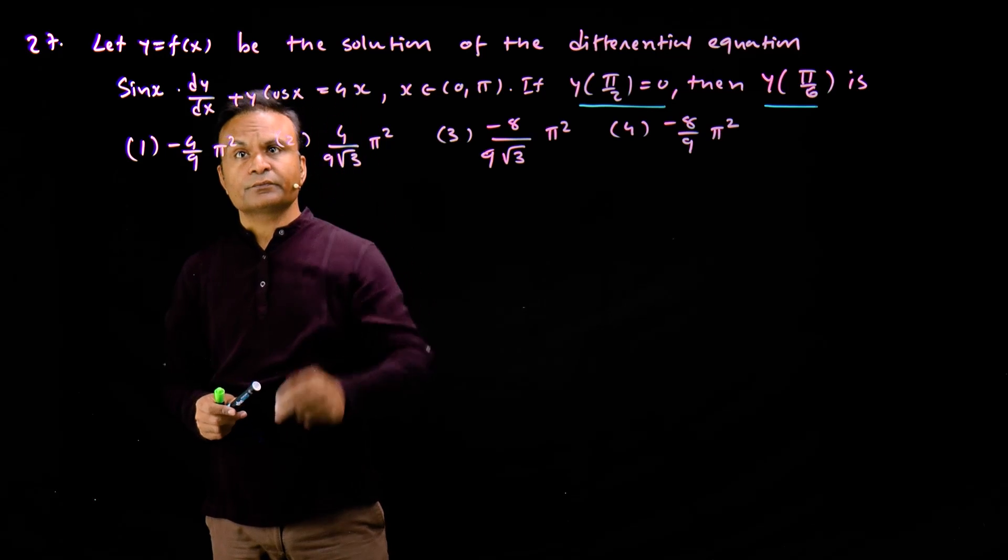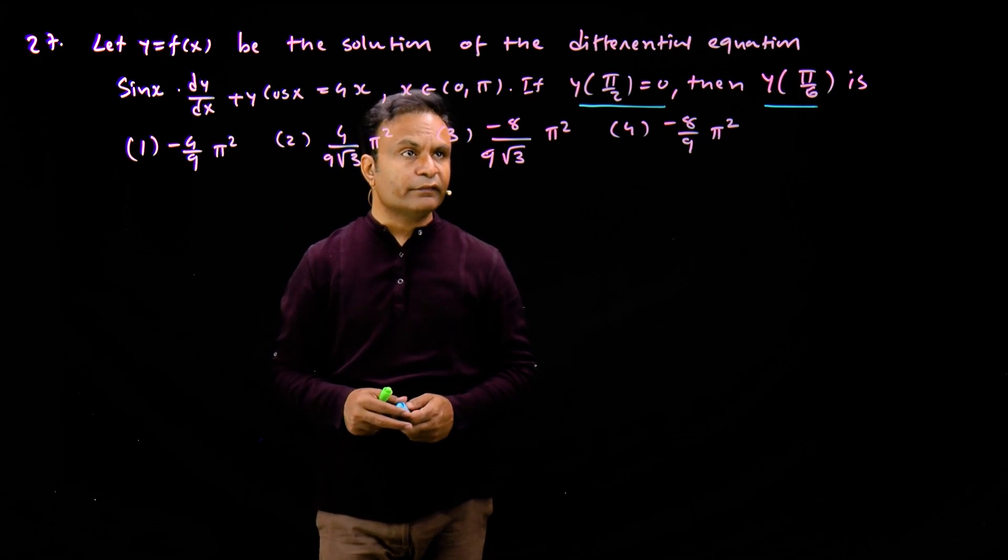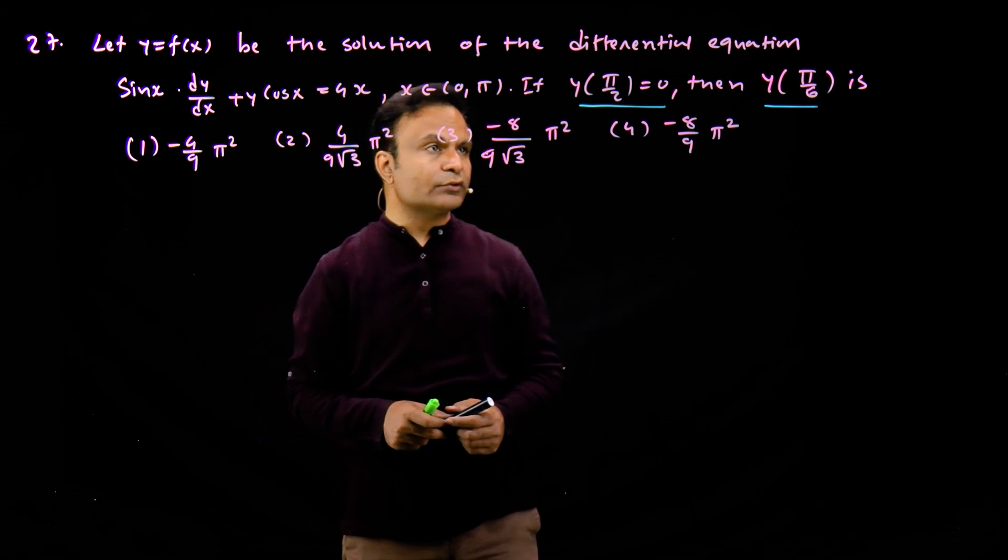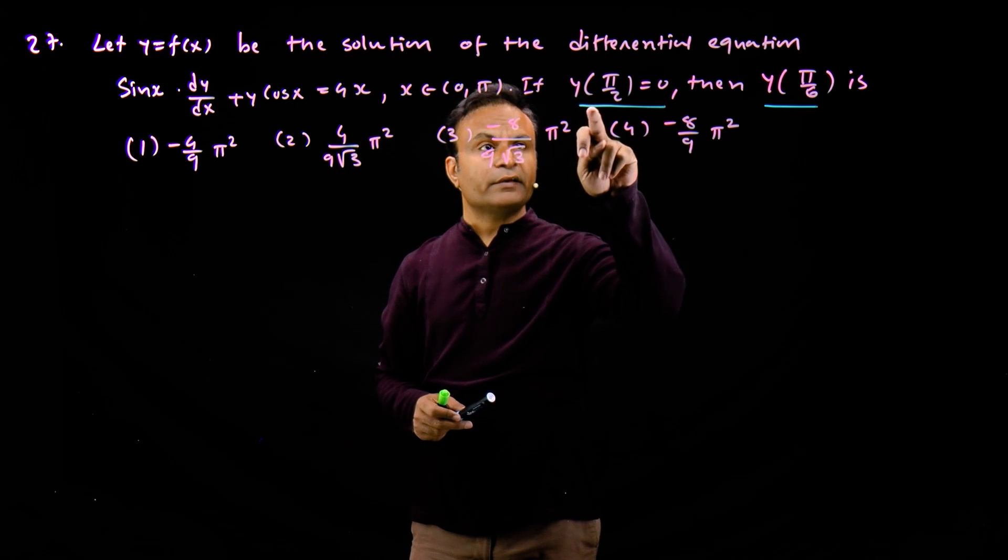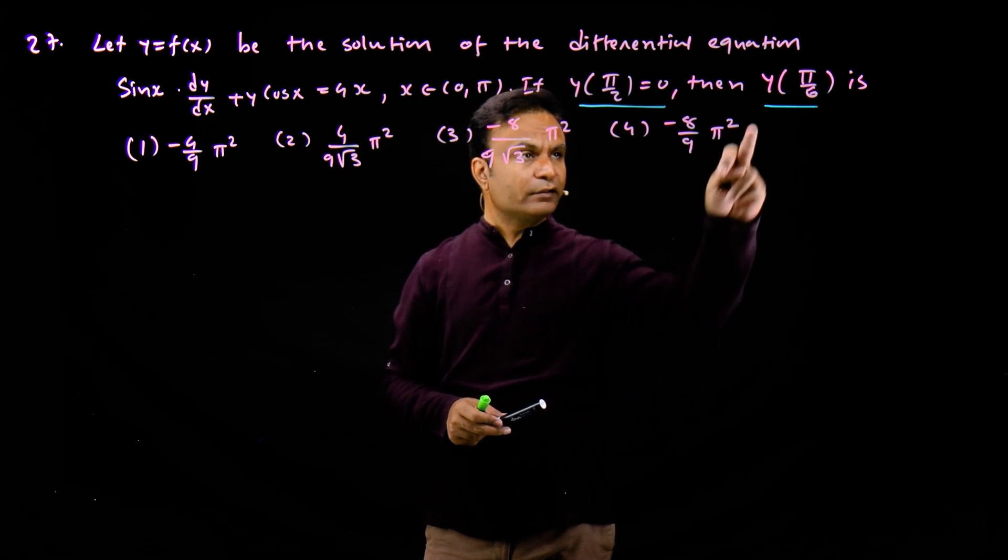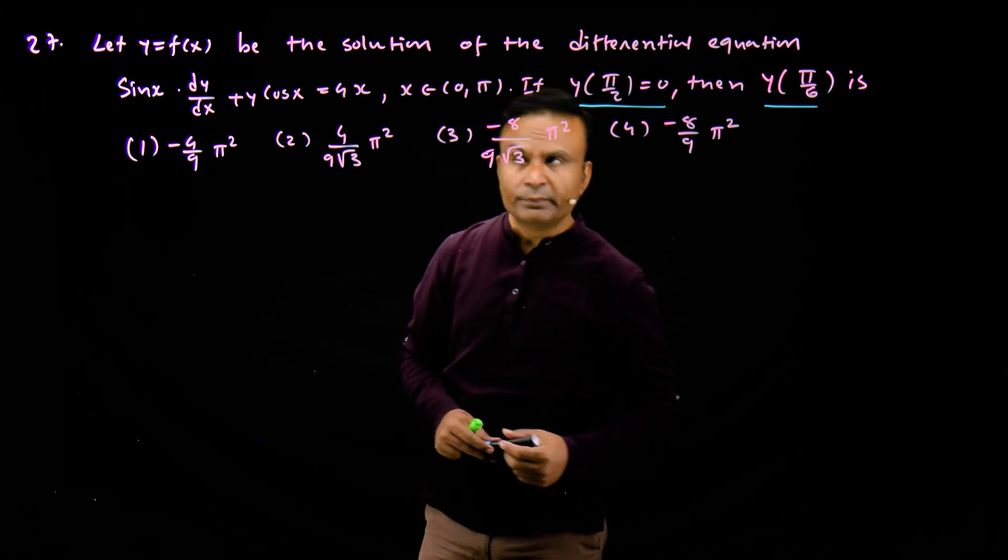If y of pi by 2 is equal to 0, that means the value of y when x is equal to pi by 2 is 0, then we have to find the value of y when x is equal to pi by 6.